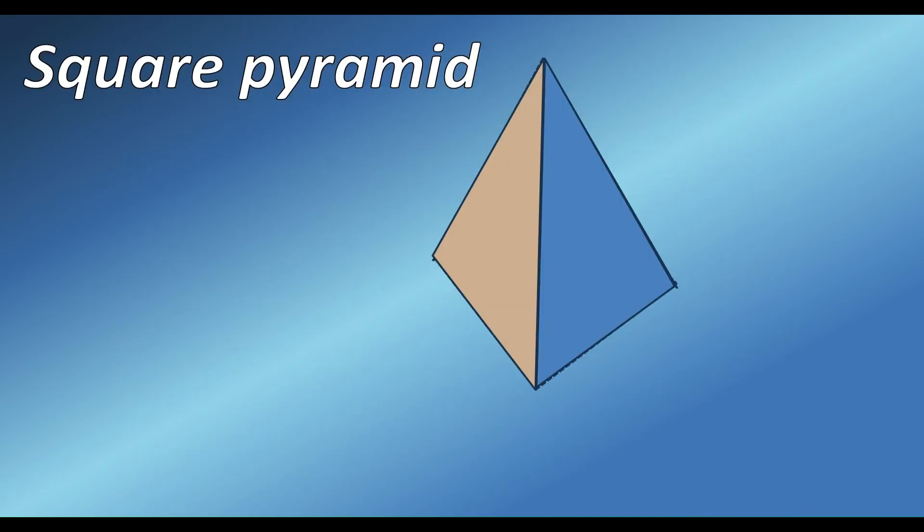Similar to prisms, pyramids are also named according to the shape of its base. Square pyramid has a square-shaped base. It has 4 triangular lateral faces with a total of 5 faces.